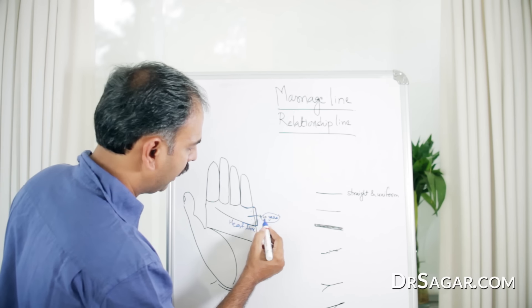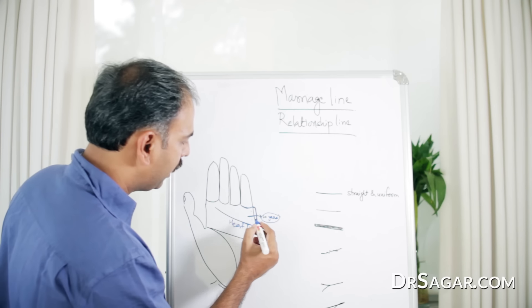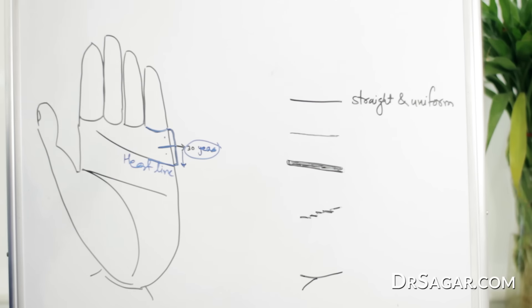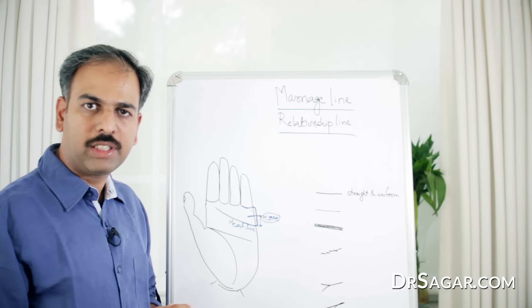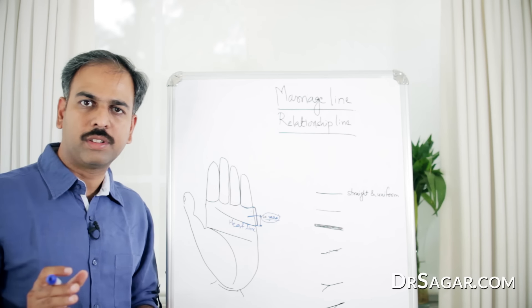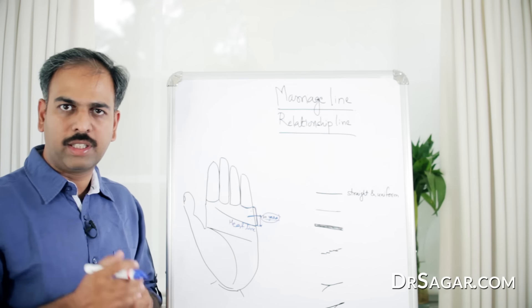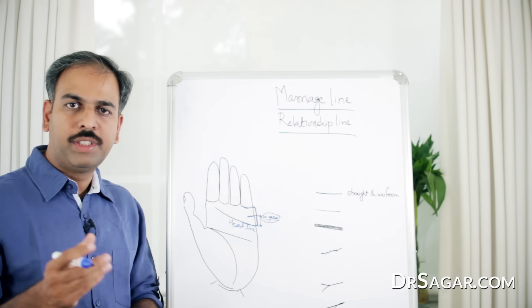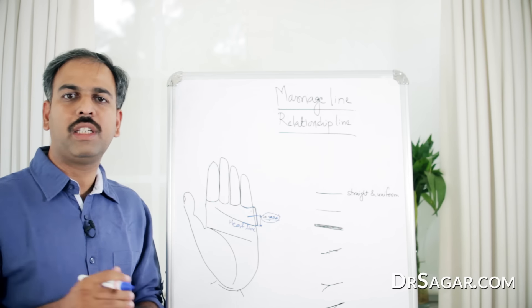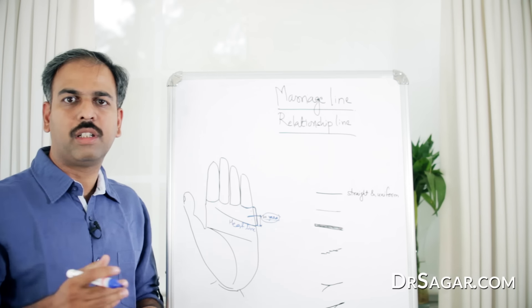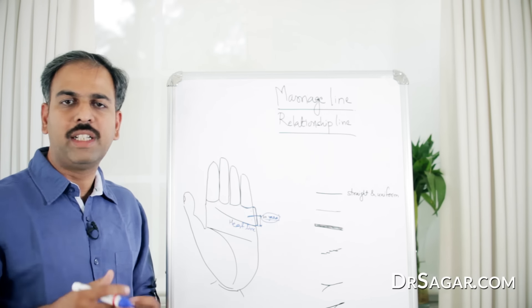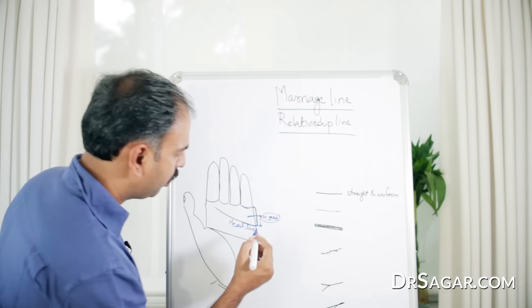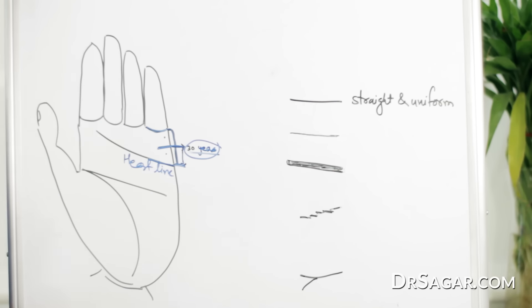If any relationship line is present below the line which we call 30 years, below this area, if the relationship line is present, the two persons which are coming in contact as a relationship or as a marriage, the attraction between them is only emotional. It is an emotional attachment. It is not intellectual or mentally attached. They are only sentimentally attached with each other. This is the part when the person gets sentimentally attached.